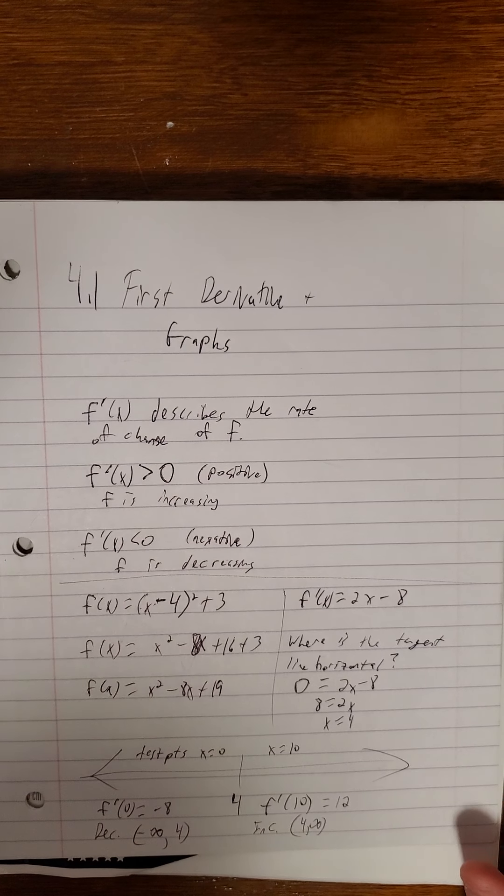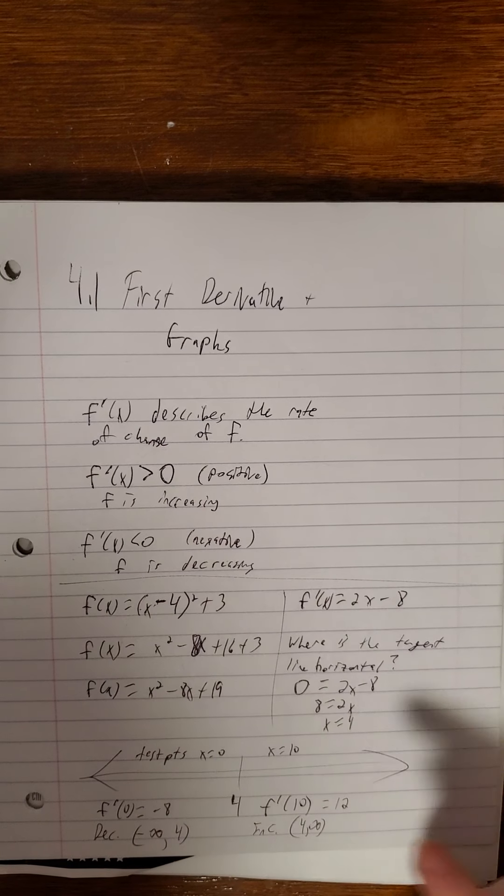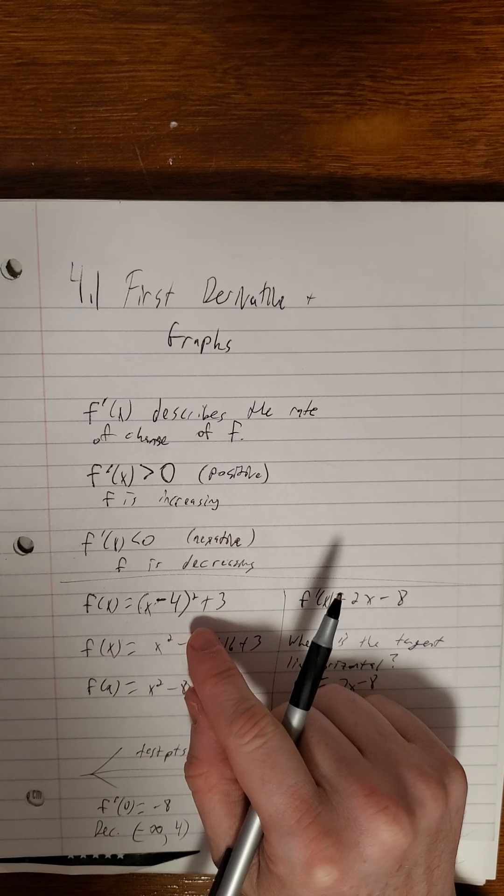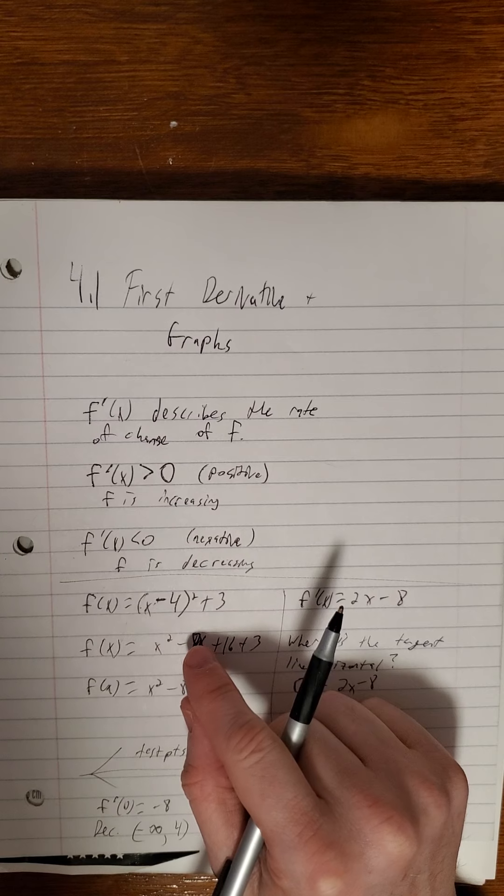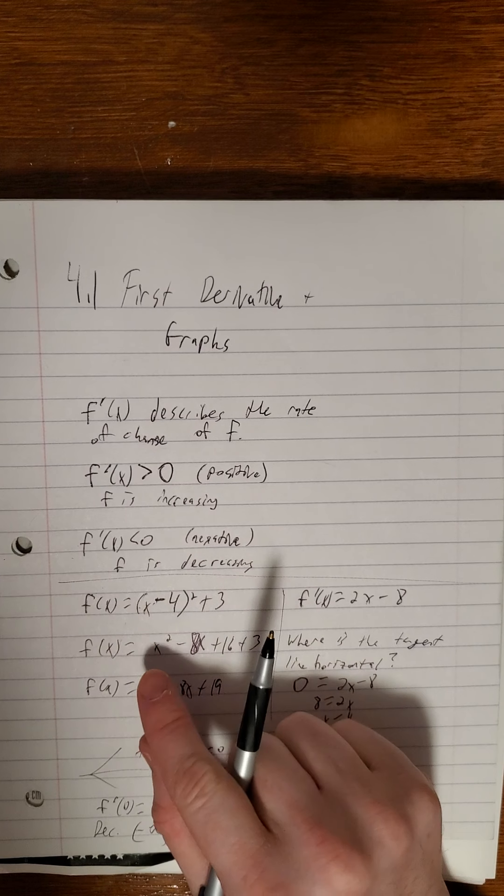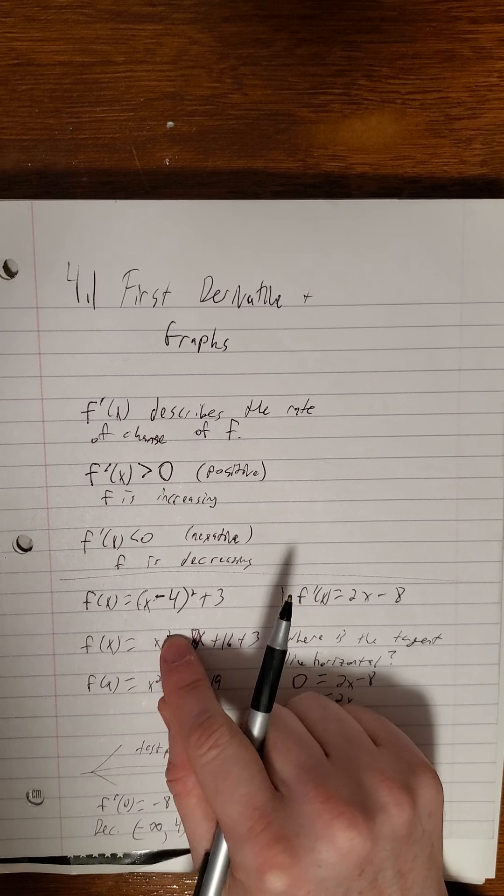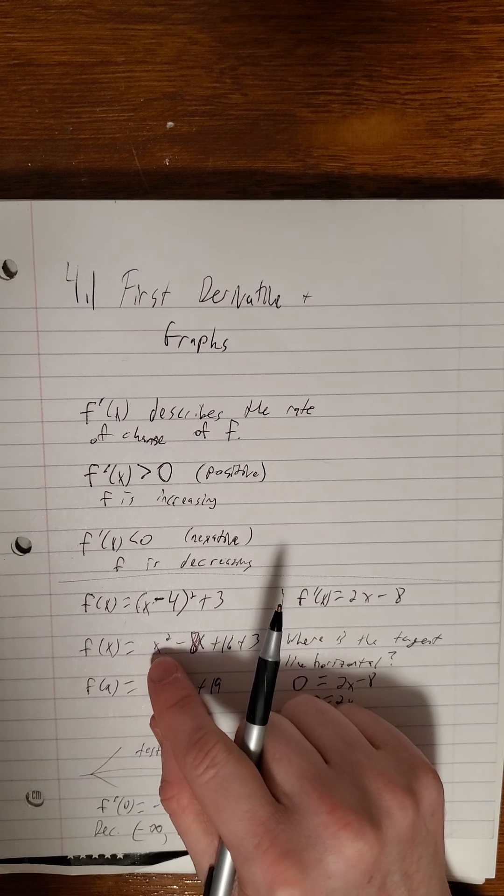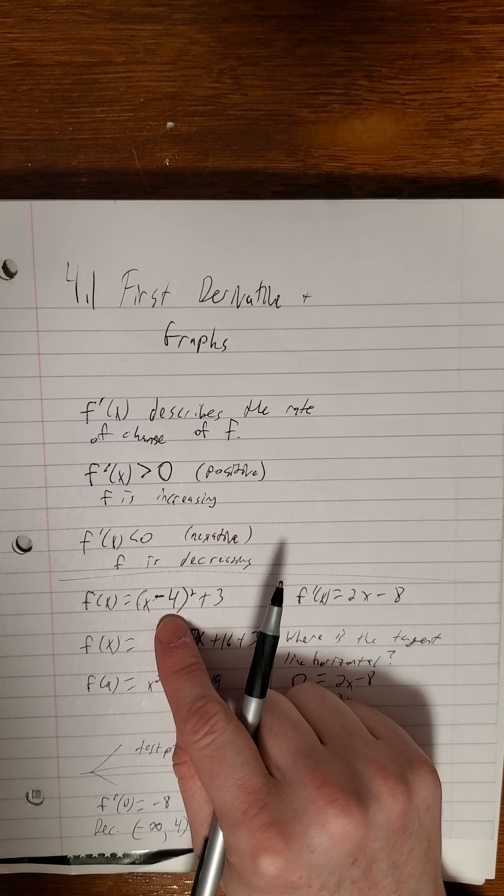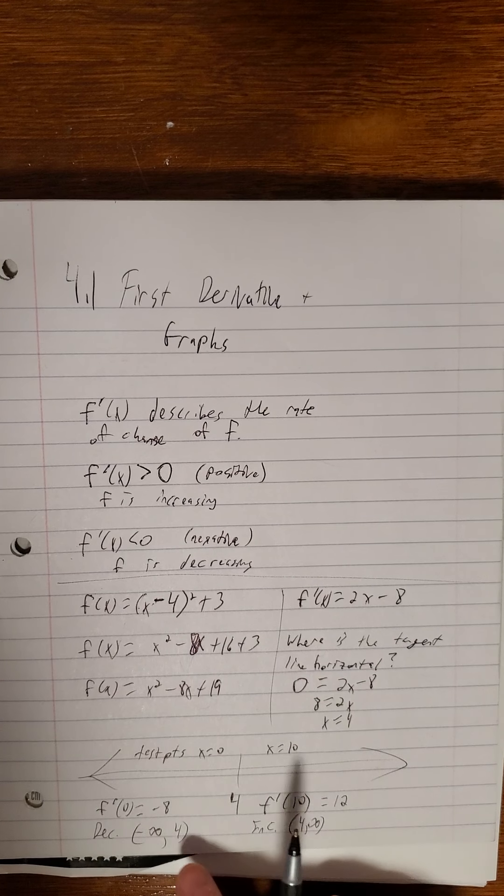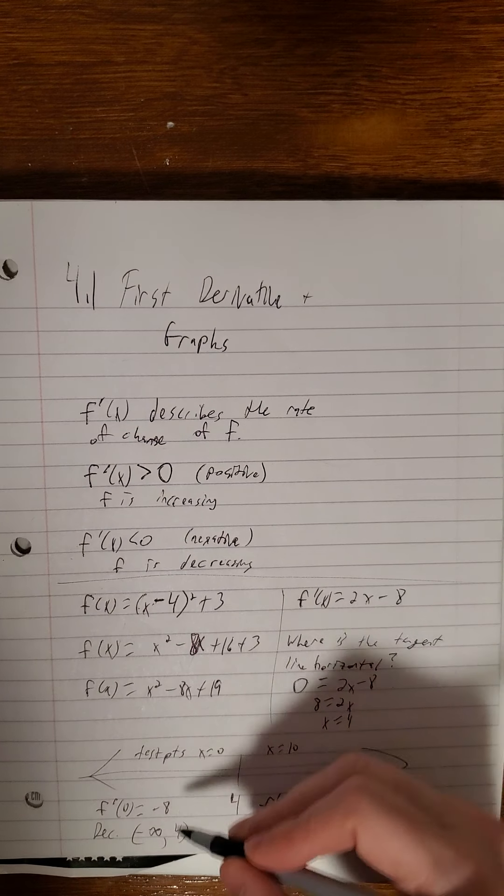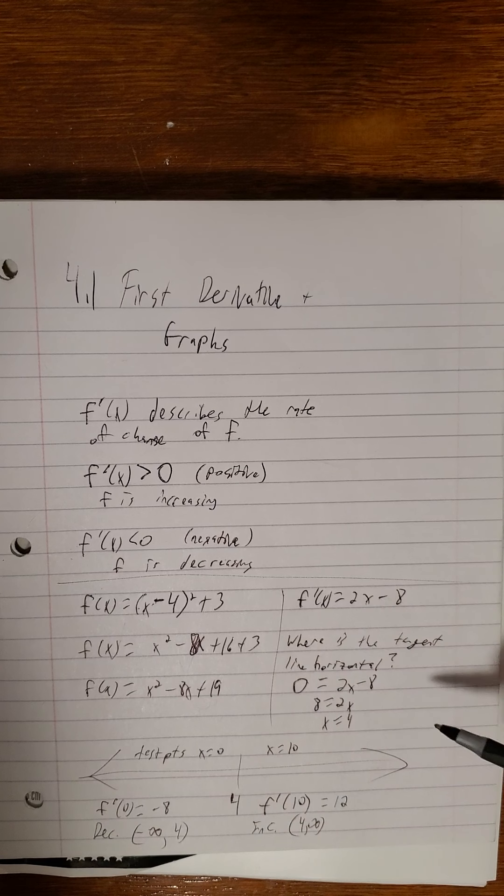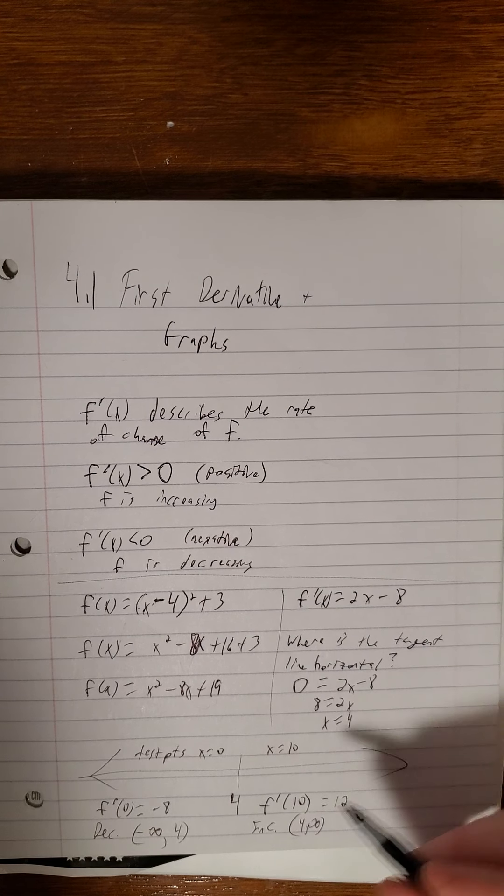Now notice this does fit with what we know about parabolas. I intentionally picked one that you could glance at this and in your mind's eye already sort of picture what the graph looks like. It's a parabola since we're looking at an x squared graph. Leading coefficient is positive, so we know it opens up and the vertex is at 4, 3. So x equals 4, we go from a decreasing function to an increasing function. It bottoms out at the vertex.